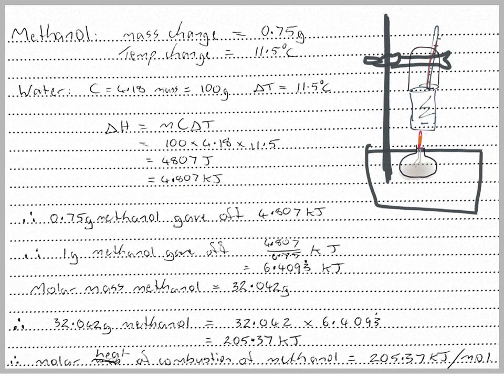So 0.75 grams of methanol - our mass change - gave off 4.807 kilojoules, because that's the amount of energy used to heat up the water in the tin can.